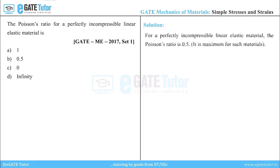It is to be remembered that for a perfectly incompressible linear elastic material, the Poisson's ratio is 0.5. It is also to be remembered that it is the maximum value for such type of materials. So the correct answer to this question is option B.